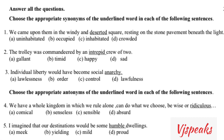First question: 'We came upon them in the windy and deserted square.' So 'deserted' — the meaning is 'uninhabited.' This is the textbook question, page number 5.